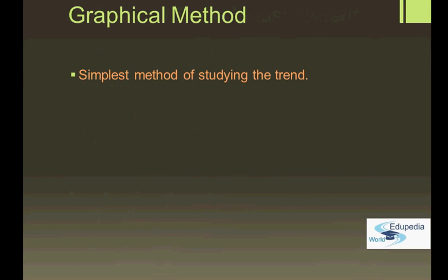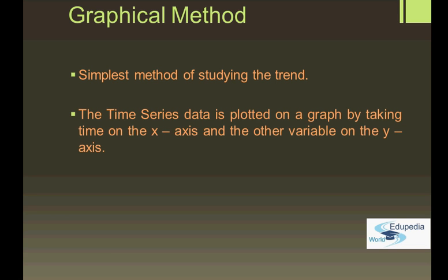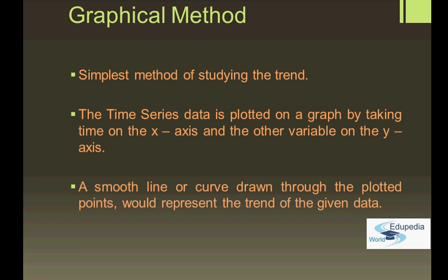Let's begin with the graphical method. The graphical method is the simplest method to study the trend. Here the time series data is plotted on a graph by taking time on the x-axis and the other variable on the y-axis. A smooth line or curve is drawn through the plotted points, which would represent the trend of the given data. Let's take a numerical example to understand how this plotting is done.